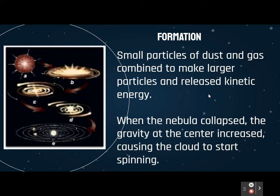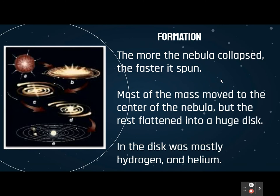When the nebula finally collapsed, the gravity at the center increased and it started to cause that cloud to spin. The more it collapsed, the more gravity pulled everything in, the faster it spun — which makes sense. If you've ever watched ice skaters or ballerinas, when they start to spin with their arms out and then pull their arms in, they spin faster. It's exactly what happened with our nebula — it was all spread out, started to spin, everything collapsed in, so it spun faster and faster.